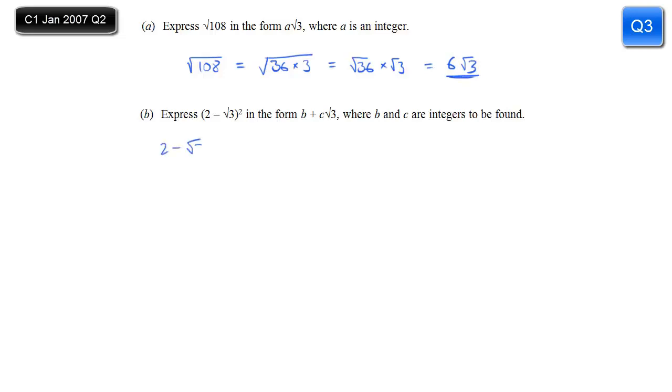Part b, express 2 minus root 3 squared in the form b plus c root 3. Basically, we have to multiply out the brackets and tidy it up. Now, you might not need this middle step. I'll put it in just for those of you who need it. We're going to multiply each thing in the first bracket by each thing in the second.